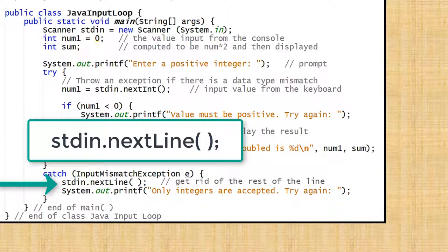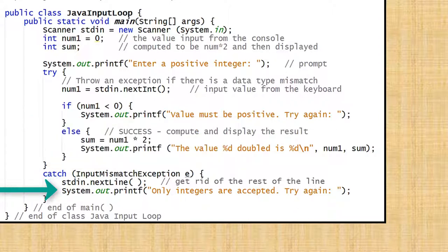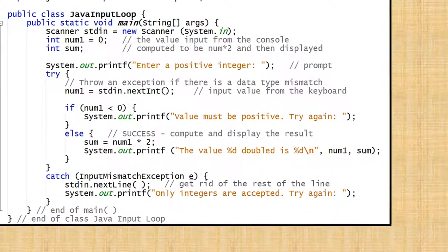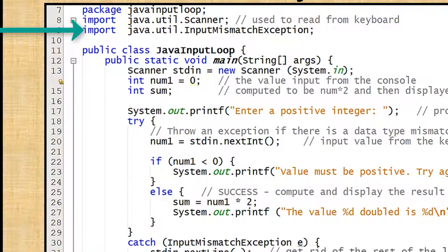The solution is to use stdin.nextLine to read the rest of the input buffer to clear it. Since there is not an assignment statement for the stdin.nextLine, the remaining data from the input buffer is discarded. Now we don't need to worry about trying to process leftover and unwanted keyboard data. The next line in the catch block displays only integers are accepted. Try again. The program needs additional code to process the input mismatch exception. This code is brought into the program by the import java.util.InputMismatchException; at the top of the program.